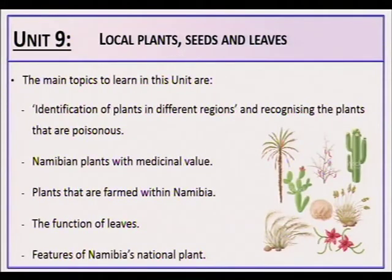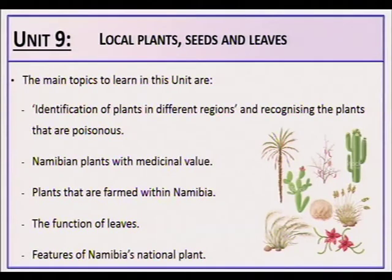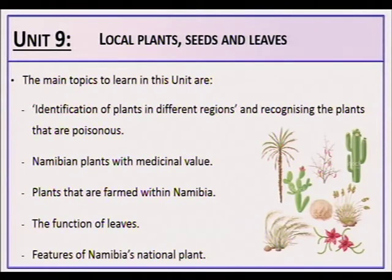Unit 9: Local plants, seeds and leaves. The main topics to learn in this unit are: identification of plants in different regions, recognizing plants that are poisonous, Namibian plants with medicinal value, plants that are farmed within Namibia, the function of leaves, and the features of Namibia's national plant.